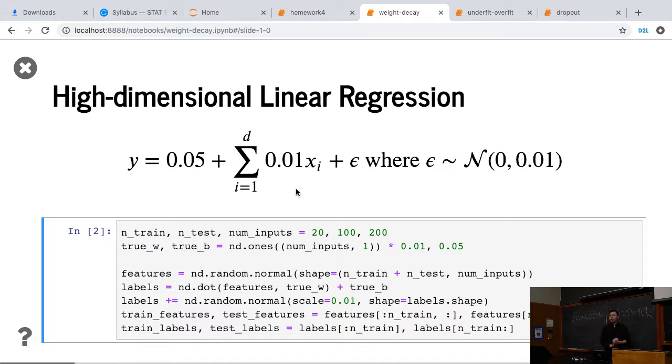That's d, it's the number of dimensions we have. The weight is pretty simple, equal to 0.05 minus 0.01x, and plus a noise. We can ignore how we actually obtain this data.